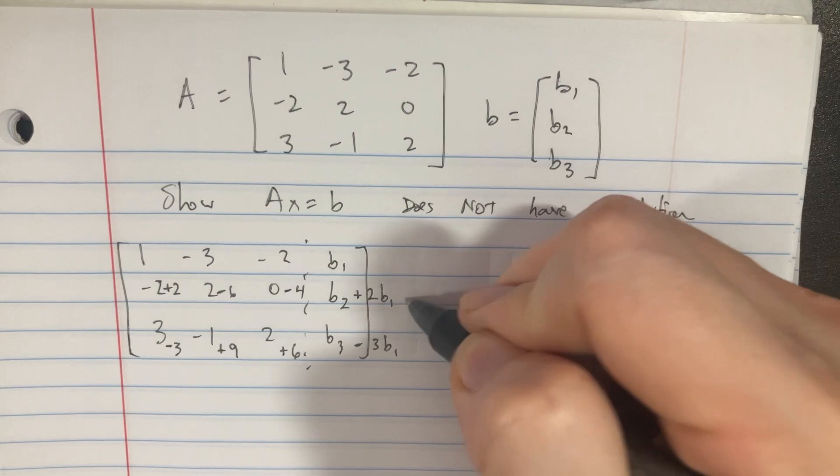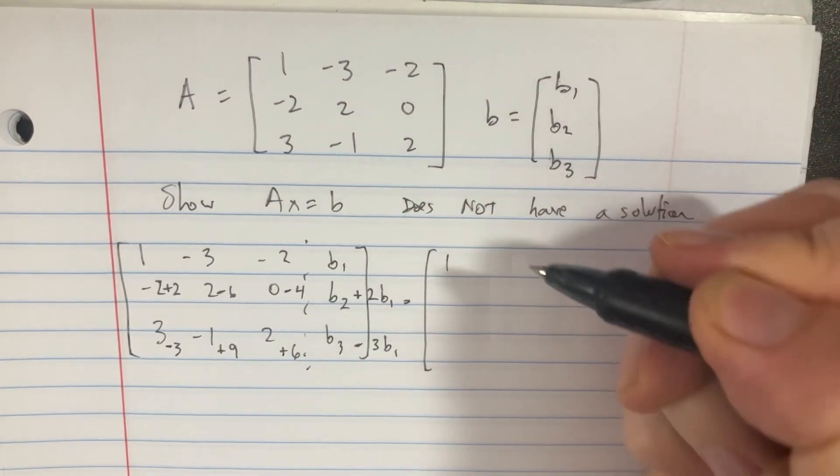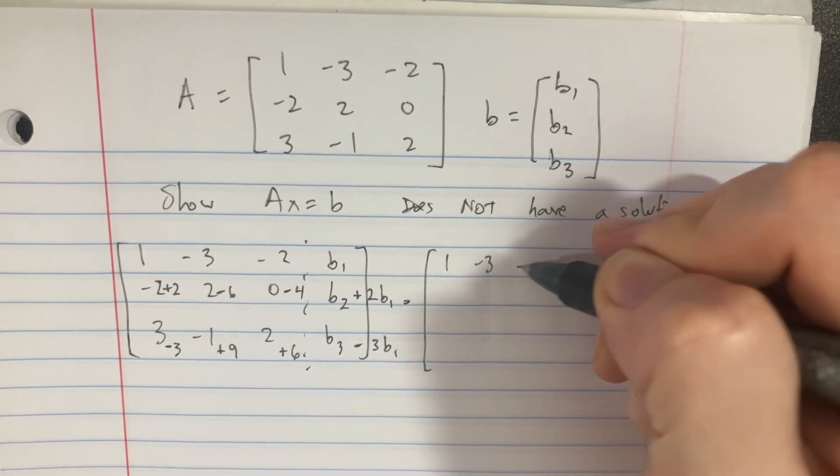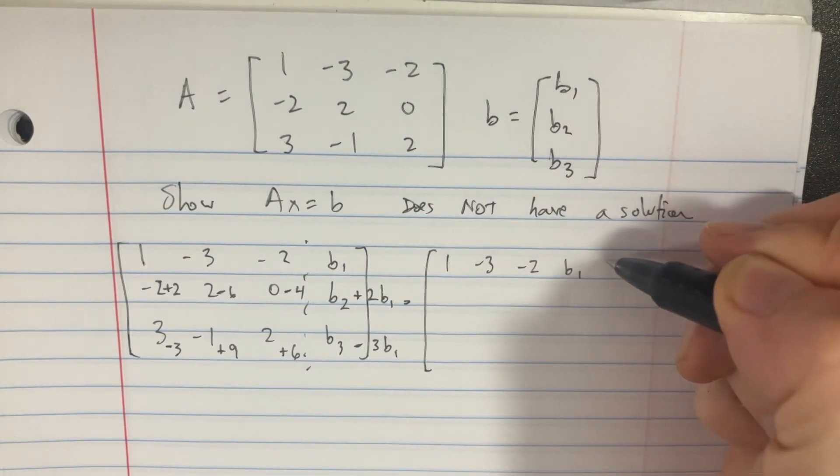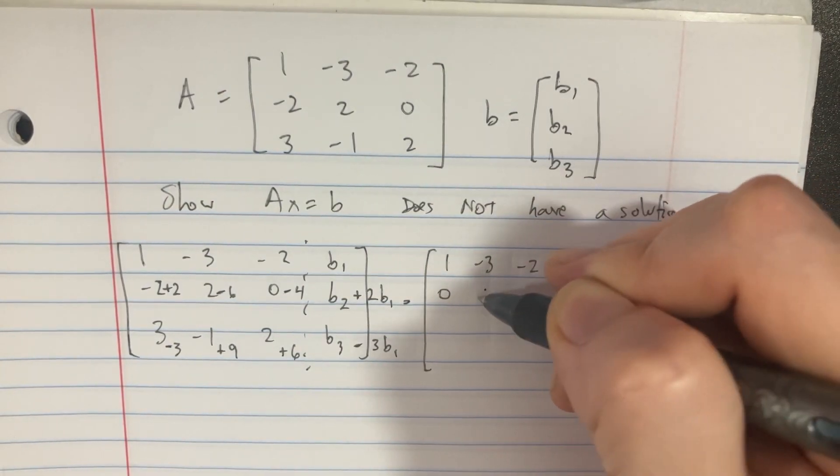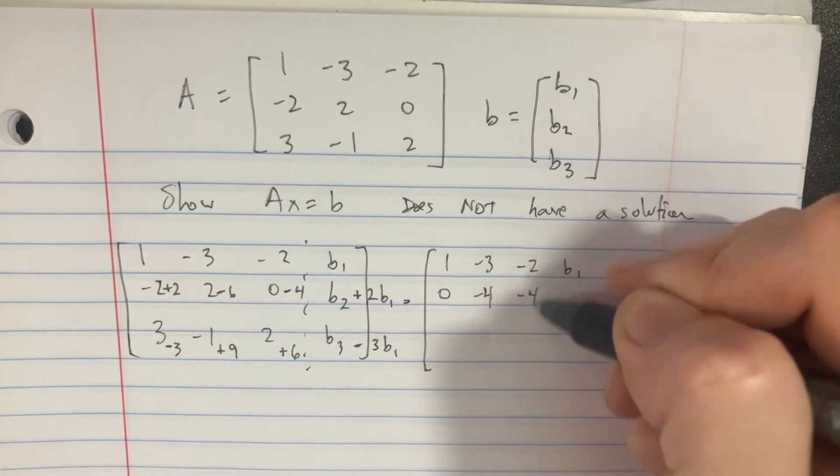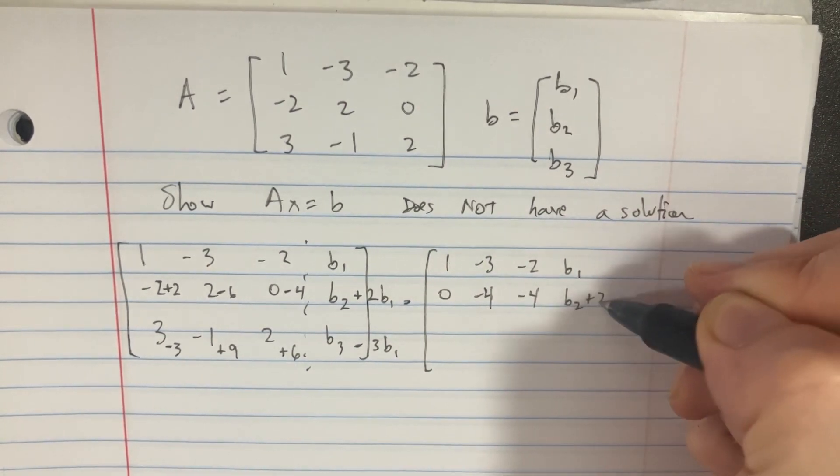So to rewrite this over here, this is going to be equal to 1 minus 3 minus 2, which would be 1. Here we have 0, negative 4, negative 4, b2 plus 2b1,